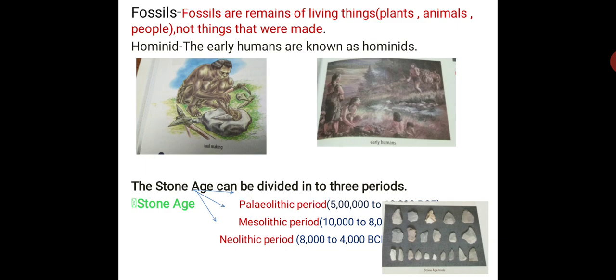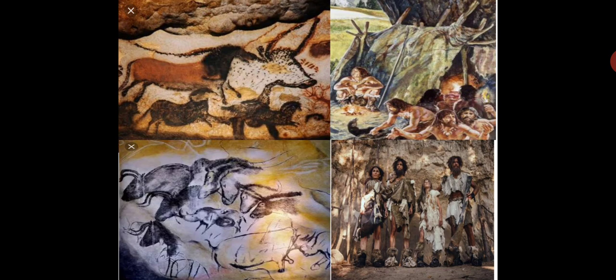First feature: food gatherers. Early humans were called food gatherers because they gathered fruits, roots, seeds, and leaves from the plants around them. They were also called hunter-gatherers because they hunted wild animals, birds, and fish.